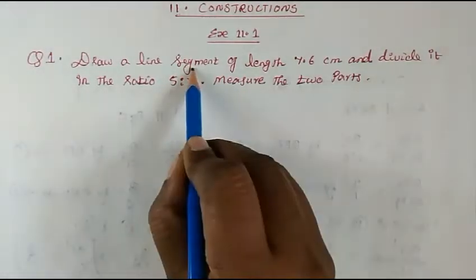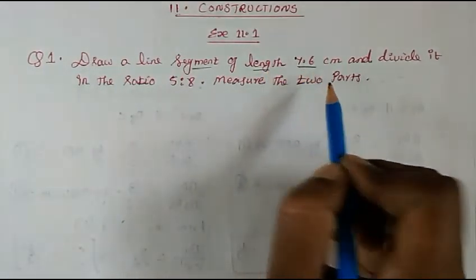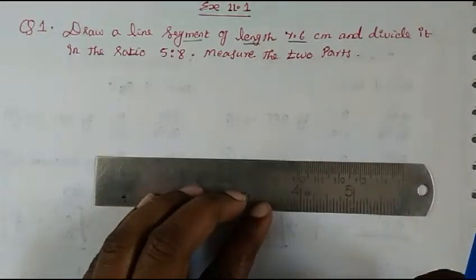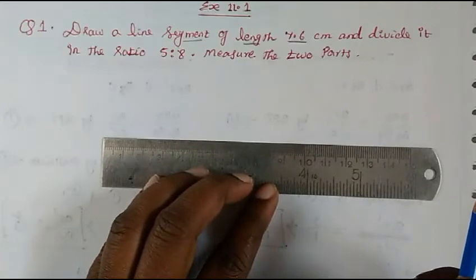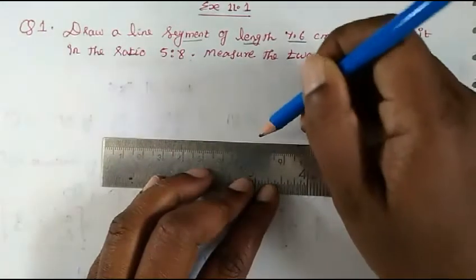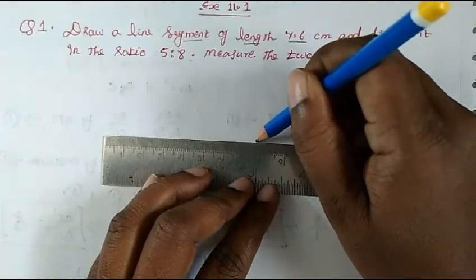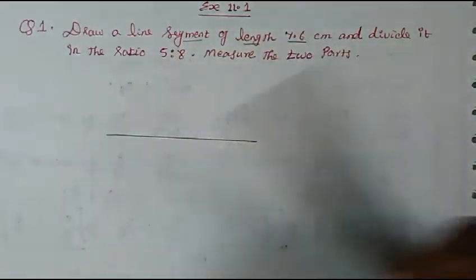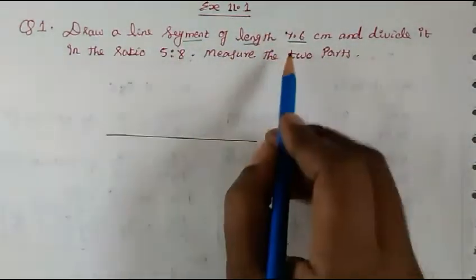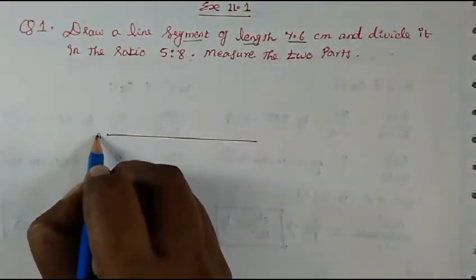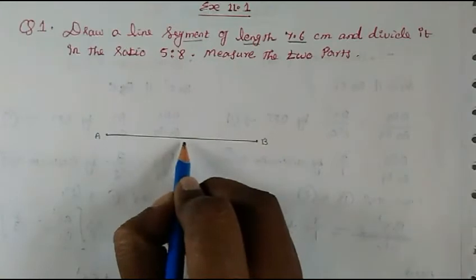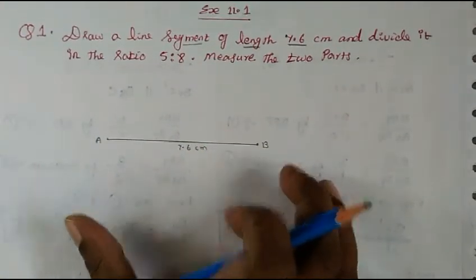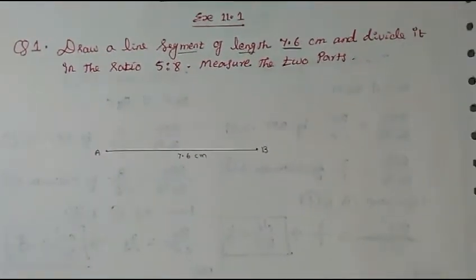First, we have to draw a line segment of length 7.6 cm. We have drawn the line segment 7.6 cm — you can name it A and B. This is 7.6 cm. Please mention all these details in the exam, otherwise your marks will be cut.